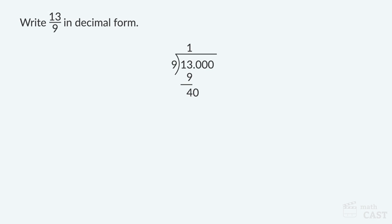Bring down a zero from the tenths place and divide 9 into 40. Since 9 divides into 40 four times, we write a 4 in the quotient just above the zero. Subtract the product of 4 and 9 from 40: 40 minus 36 equals 4.